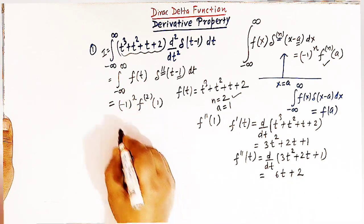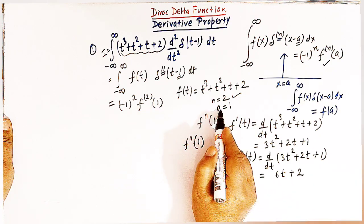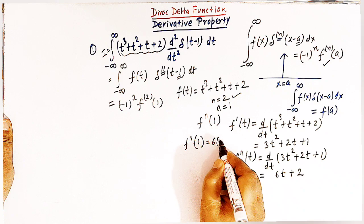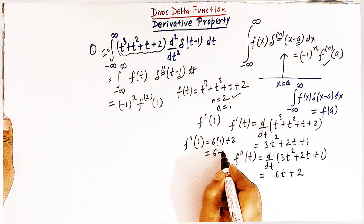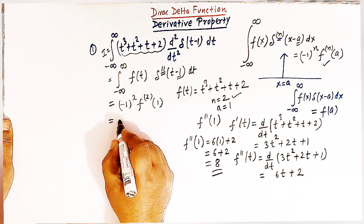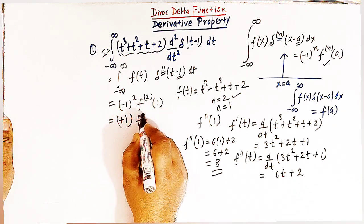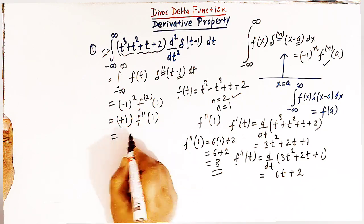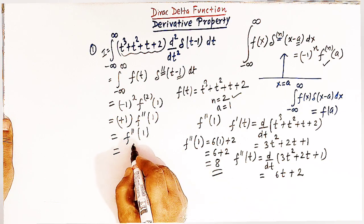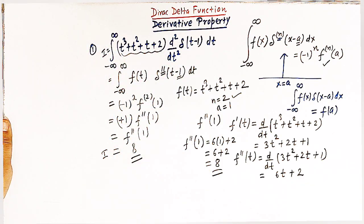The value of f''(t) evaluated at a equals 1 is obtained by replacing t with 1: 6(1) + 2 = 6 + 2 = 8. So here minus 1 squared is plus 1, and f''(1) equals 8. Therefore the value of this integral is equal to 8.